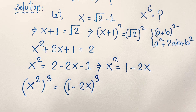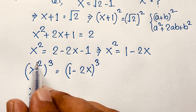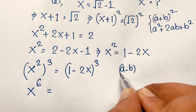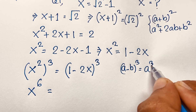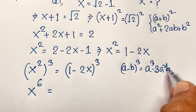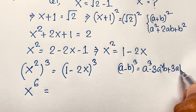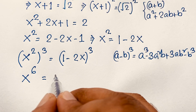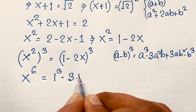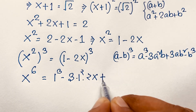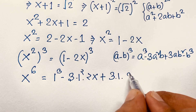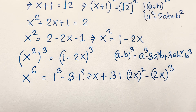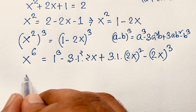We take (x²)³ = (1 - 2x)³, giving x^6 on the left. For the right side, we apply the formula (a - b)³ = a³ - 3a²b + 3ab² - b³, where a = 1 and b = 2x. Expanding: 1³ - 3(1²)(2x) + 3(1)(2x)² - (2x)³.